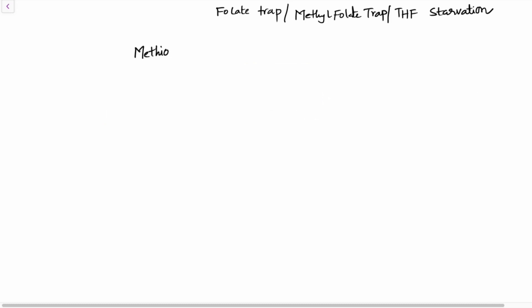Methionine, which is present in the body, is an essential amino acid — meaning you have to consume it through diet. In the body, methionine undergoes metabolism to form homocysteine. The steps involved are: methionine is first converted into S-adenosylmethionine (SAM), which with the help of methyltransferase is converted into S-adenosylhomocysteine (SAH), and later SAH is converted into homocysteine.